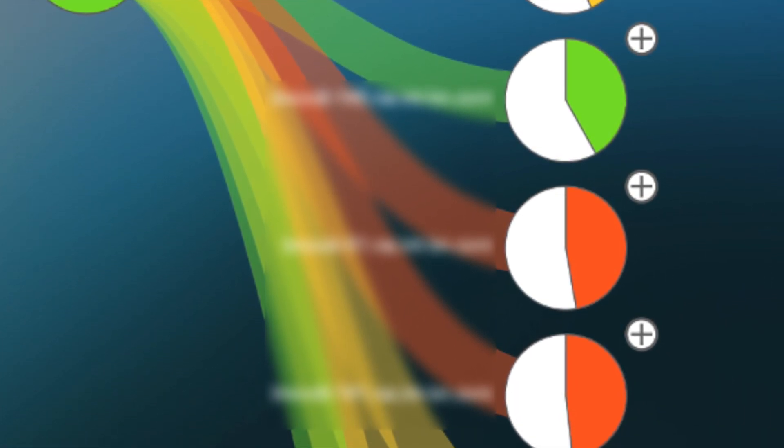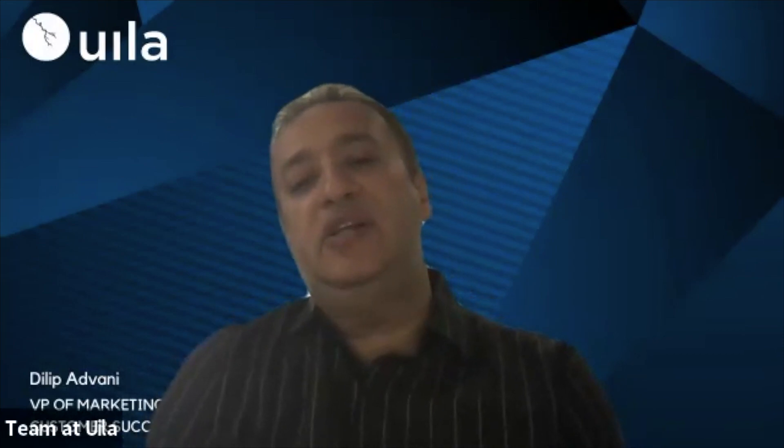The next step to identify the root cause was to figure out what was causing these spikes. For that, the IT team leveraged the process-level information provided by the Vela solution. They looked at the processes inside the VDI desktop VMs, and you can see that the spikes are clearly attributed to the Sophos update that was running on every single VDI VM at the same time.